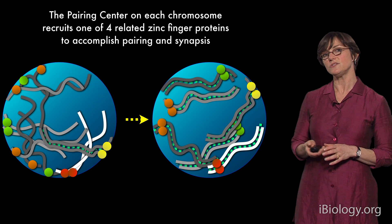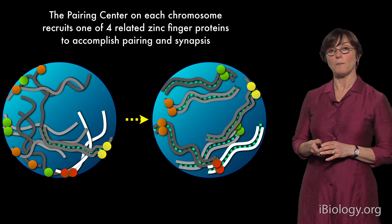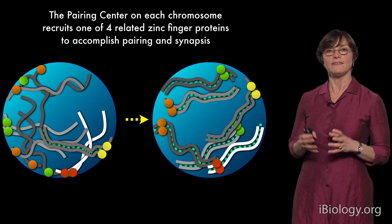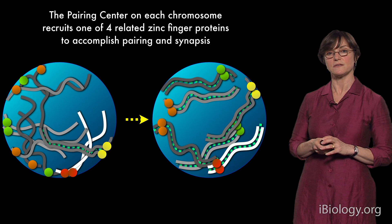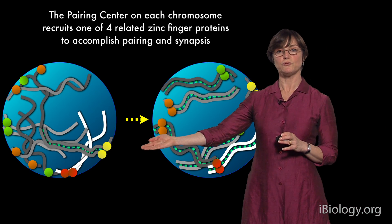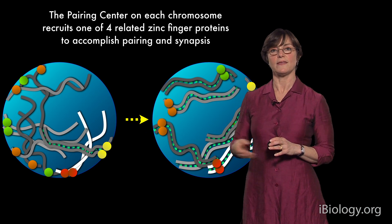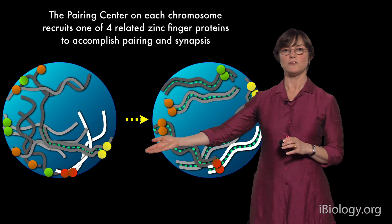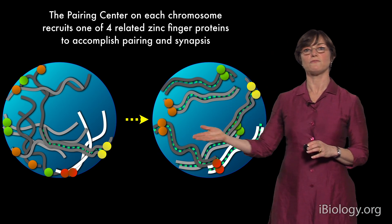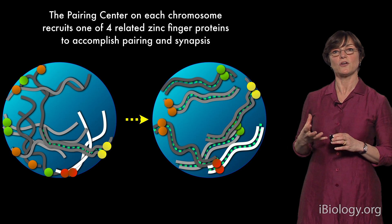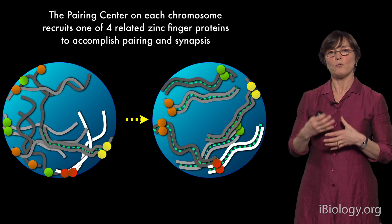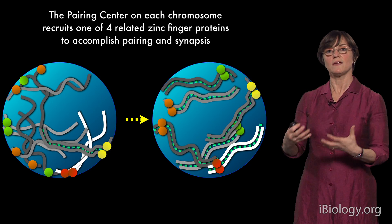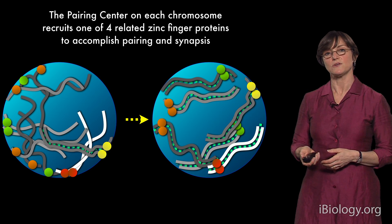I introduced you to these special regions that we call pairing centers, which are on each of the six chromosomes in C. elegans that play critical roles in the process of pairing and synapsis. These chromosome regions recruit special proteins that have zinc fingers that bind to short sequence motifs, and they interact with the nuclear envelope — that's essential for chromosomes to undergo pairing and synapsis. We want to understand what it is about these interactions with the nuclear envelope that promote the pairing and synapsis of homologous chromosomes.